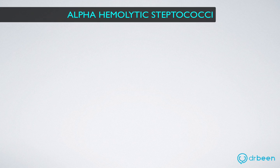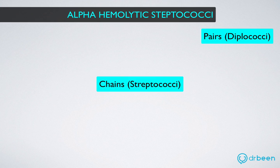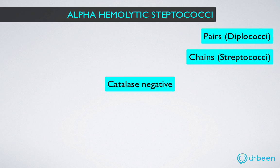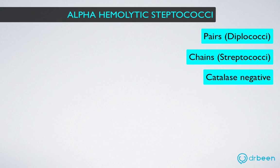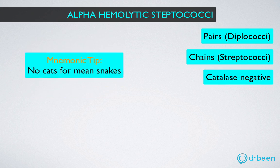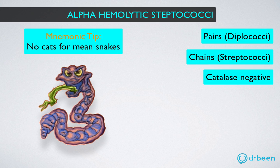Alpha hemolytic streptococci are found in pairs or long chains. These pathogens are catalase negative. To help you remember this metabolic property, we will depict these pathogens as snakes. This is easy to remember because snakes bite cats — catalase negative — and spherical chains form snakes called streptococci. Remember catalase negative by 'no cats for the mean snakes.'